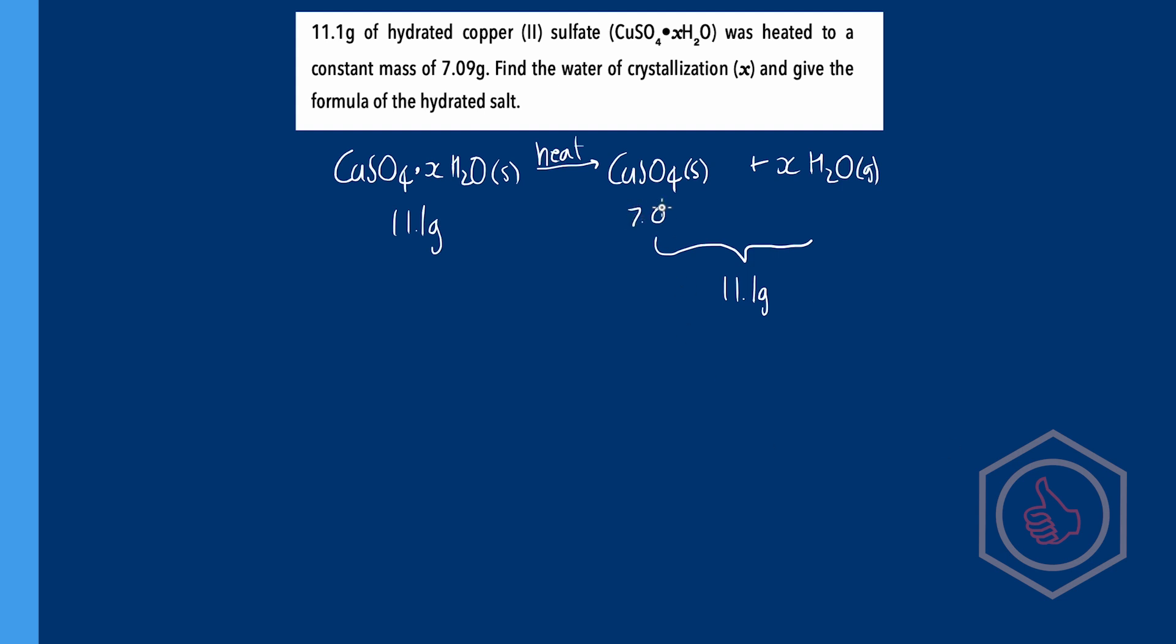Well if 7.09 grams of anhydrous CuSO4 are formed then the mass of water released must be the original starting mass of the hydrated salt, so 11.1 minus 7.09 which gives 4.01 grams. Great now we have the ratio of copper sulfate in the crystal to water, 7.09 grams to 4.01 grams.